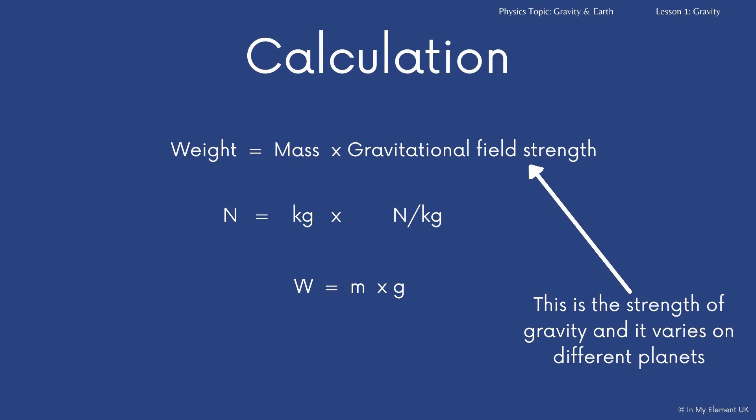Now, important to remember, gravitational field strength is the strength of gravity will vary on different planets. We are generally referring to it on Earth, unless the question is about something different. And on Earth, this is about 9.81 newtons per kilogram. You might be given a different value. Sometimes they'll say it's 9, sometimes they'll say 9.8, sometimes they'll just round it up to 10. They will tell you.